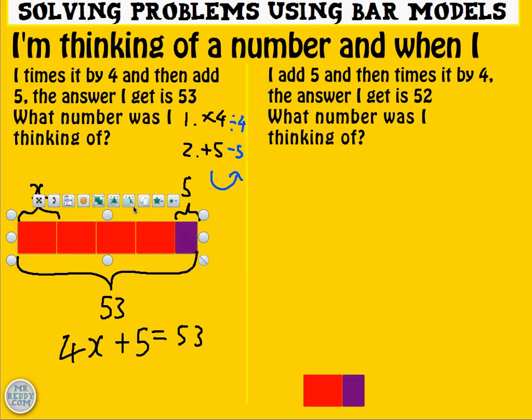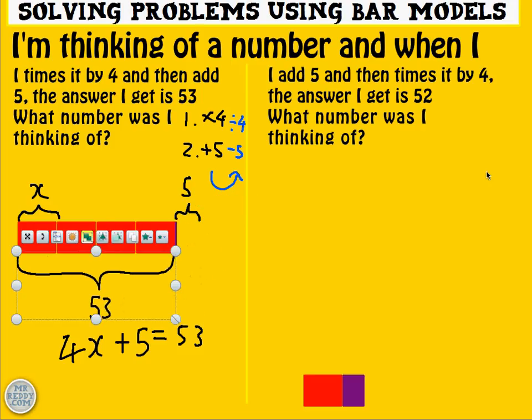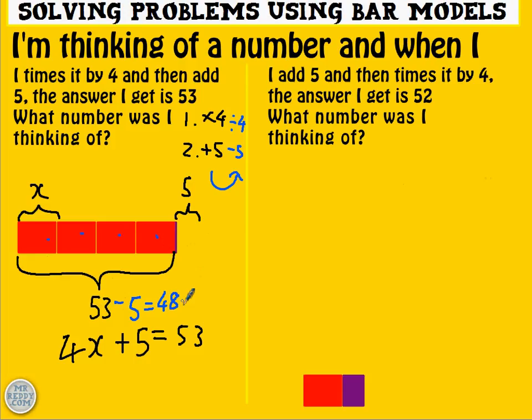Hopefully, the bar model will show you what's going on. If I take away 5, you're left with 4 lots of x. Okay, and 4 lots of x will equal 53 take away 5, which is 48. So these four red rectangles, these four lots of x, equal 48. I then need to do 48 divided by 4 to work out what x is. Because you can look at it two ways. x times 4 is 48, or 48 divided by 4 is x. So x equals 48 divided by 4. x, therefore, equals 12.